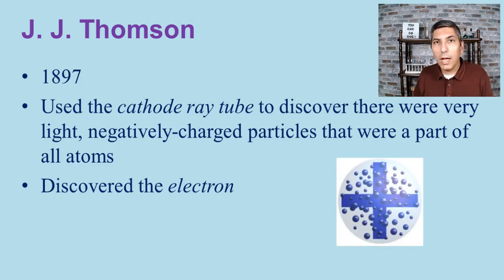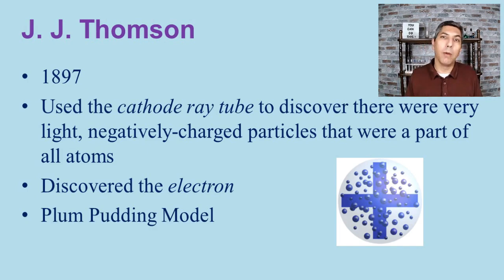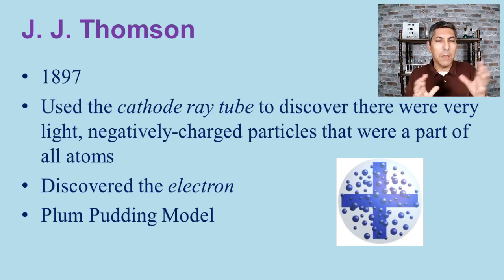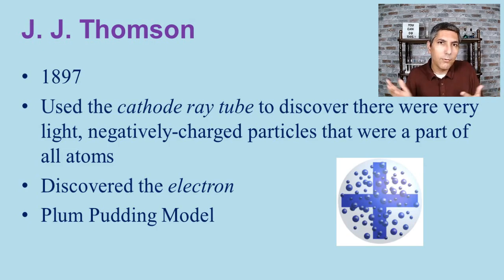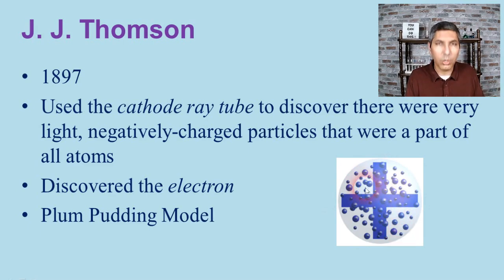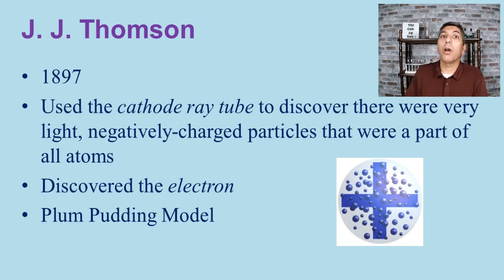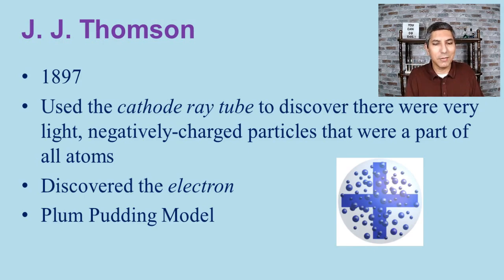Being a good scientist, J.J. Thomson tried to describe what atoms looked like and came up with what we today call the plum pudding model. He surmised that an atom was essentially a mass of positively charged material with negatively charged electrons randomly floating around inside. He called it the plum pudding model because the electrons were scattered randomly, like plums in plum pudding — or, if you prefer, like chocolate chips randomly scattered in a chocolate chip cookie.